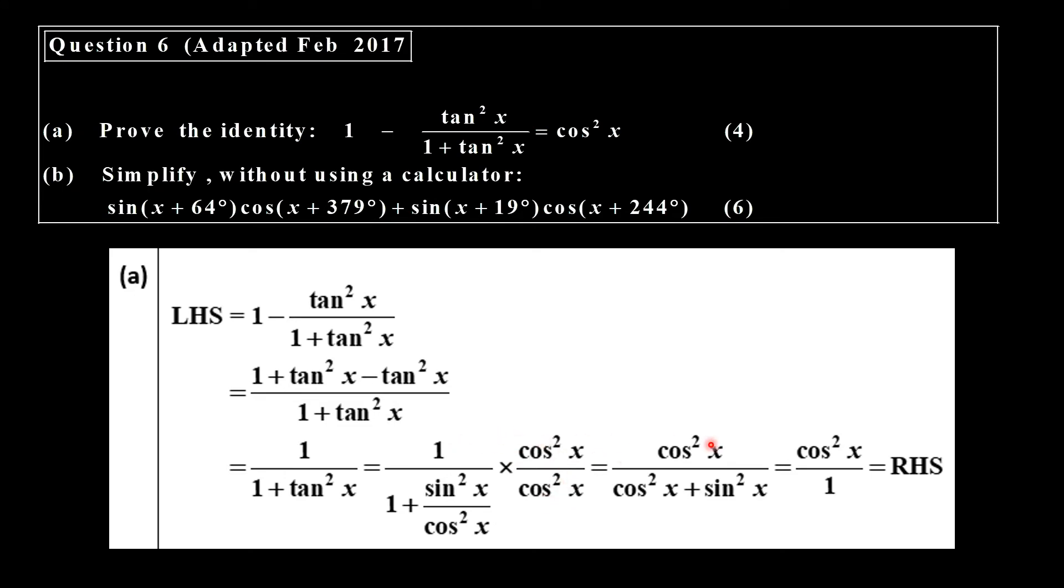Cos squared times 1 gives you that. That times 1 gives you cos squared, and that cos squared cancel. For that cos squared, you get sin squared. And cos squared plus sin squared is an identity, which is 1. And that is my right-hand side. That's the right-hand side there.